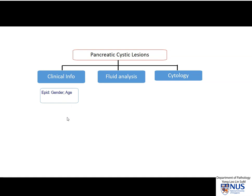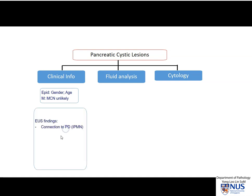In terms of clinical information, the gender and age are very important. For example, in male patients, mucinous cystic neoplasm is very unlikely — they are far more common in women, as well as the solid pseudopapillary neoplasms. Other important clinical information would be the actual findings on the EUS FNA. If the cystic lesion is connected to the pancreatic duct, then there is a high chance that we may be dealing with an IPMN. In this particular case, it was actually connected to the pancreatic duct.